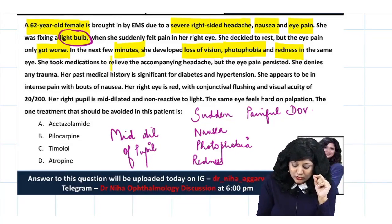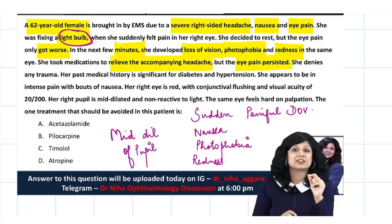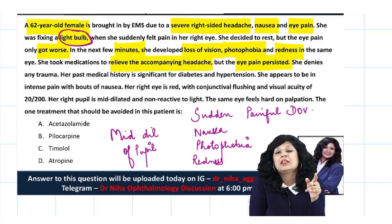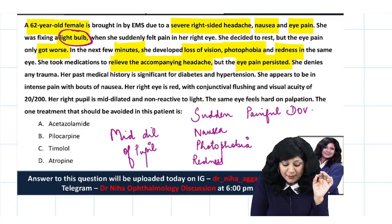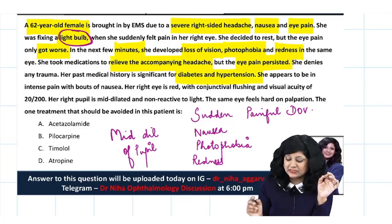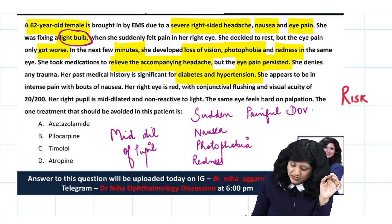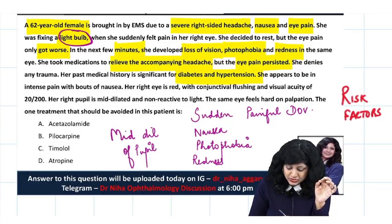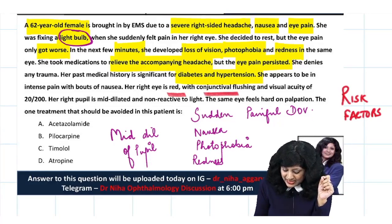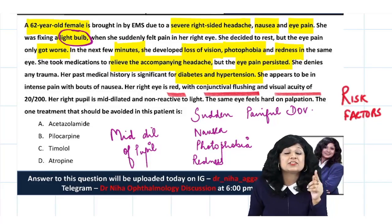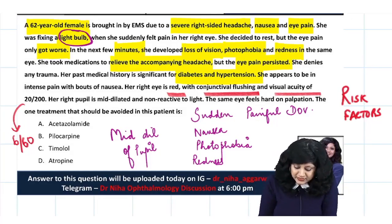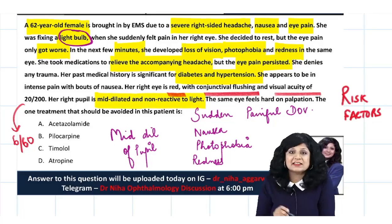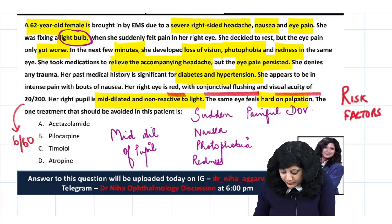She took medications to relieve the headache but the eye pain persisted — not helped by usual medications. She denies any trauma. Past medical history is significant for diabetes and hypertension — these are risk factors for glaucoma. Her eye is red with conjunctival flushing and visual acuity is very low at 20/200, which is 6/60 vision. Her right pupil is mid-dilated and non-reactive to light, and the same eye feels hard on palpation.